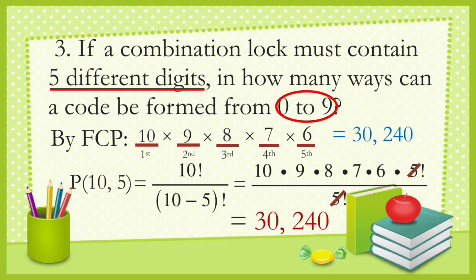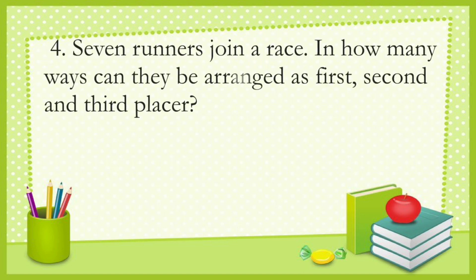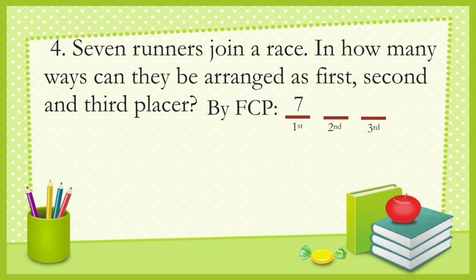Number four: seven runners join a race. In how many ways can they be arranged as first, second, and third placer? By the fundamental counting principle, for first place there are seven runners competing. Once one wins first place, there are six choices remaining for second place. Once second is settled, five runners remain for third place.